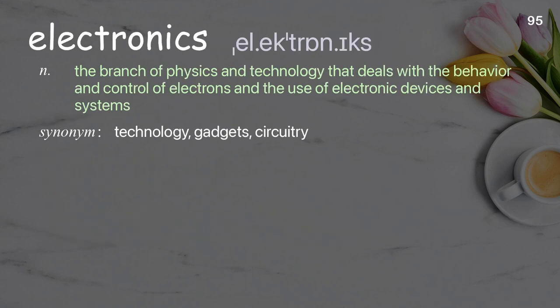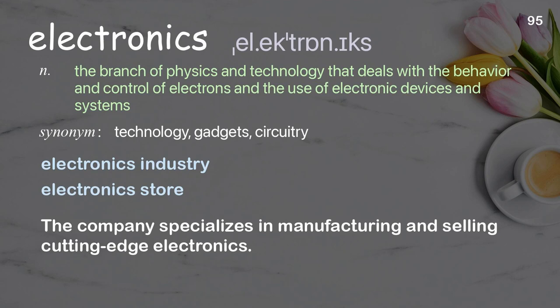Electronics: The branch of physics and technology that deals with the behavior and control of electrons and the use of electronic devices and systems. Examples: Electronics industry, Electronics store. The company specializes in manufacturing and selling cutting-edge electronics.